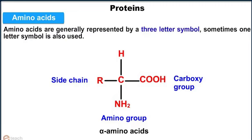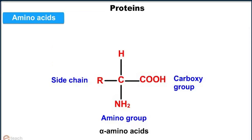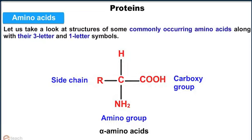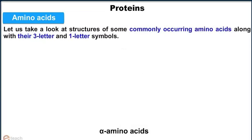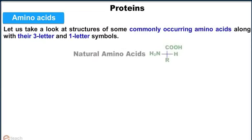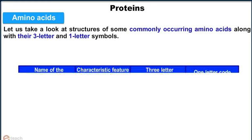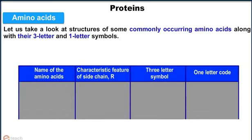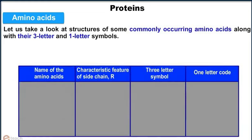Amino acids are generally represented by a three-letter symbol. Sometimes a one-letter symbol is also used. Let us take a look at the structures of some commonly occurring amino acids along with their three-letter and one-letter symbols.